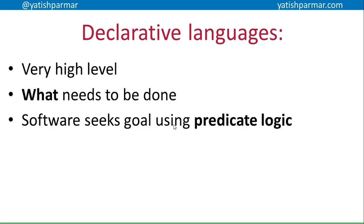You're not worried about what's going on at that low level. So declarative languages are very high level. They specify what needs to be done, not how at all. Some people will say that HTML is a declarative language because it just specifies what data is on the page — it doesn't say anything about how it should be presented, and it leaves that up to other things.